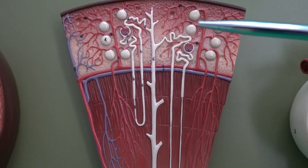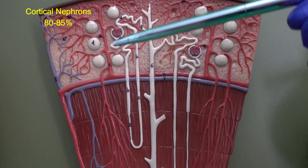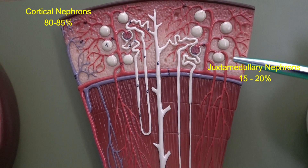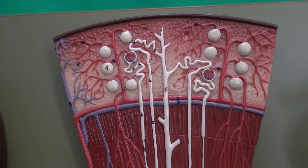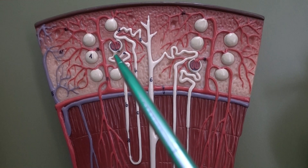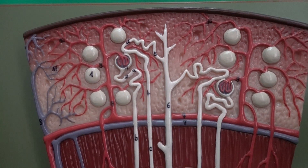In kidneys, we find two groups of nephrons. 80 to 85% of the nephrons look like the nephron on the left side of this model, and we name them cortical nephrons. 15 to 20% of the nephrons look like the nephron on the right side of the model, and we name this nephron juxtamedullary nephron. In this model, I will summarize the main differences between cortical nephron and juxtamedullary nephron.